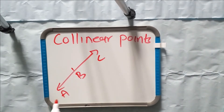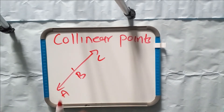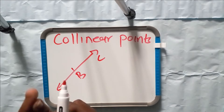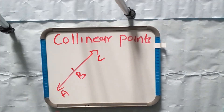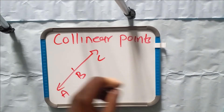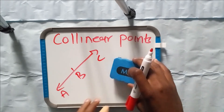There are two things you need to know: the points are on the same straight line, and they have the same gradient. Let's look at the following example.